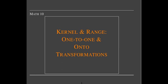In this short video, we're going to talk about some properties of linear transformations. In particular, we're going to talk about two sets associated with linear transformations — the kernel and the range — and two properties that a linear transformation may or may not have: one-to-one, and onto.